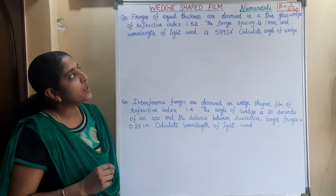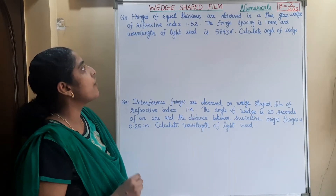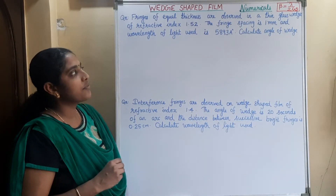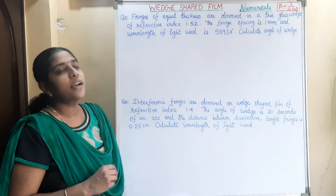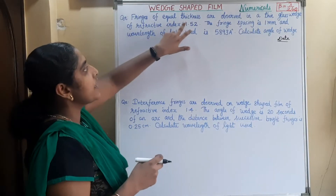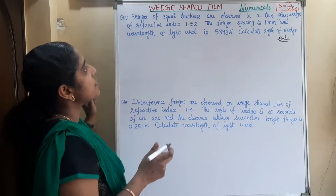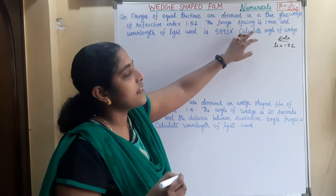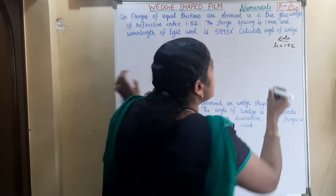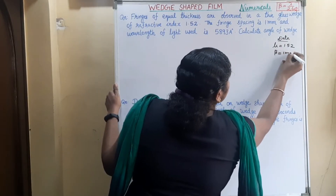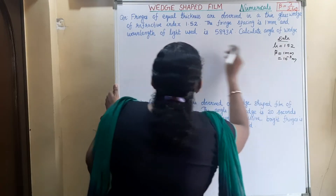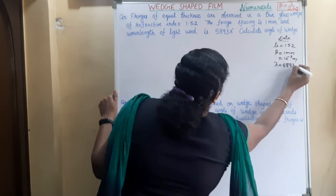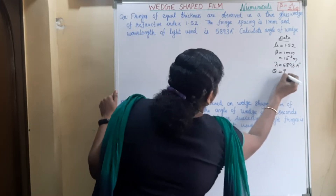We can see the first question. Fringes of equal thickness are observed in a thin glass wedge of refractive index 1.52. The fringe spacing is 1 mm and wavelength of light used is 5,893 Angstrom. Calculate angle of wedge. So mu equal to 1.52, fringe width beta is equal to 1 mm, that is 10 raise to minus 3 meter, and lambda is equal to 5,893 Angstrom. We have to find out theta.